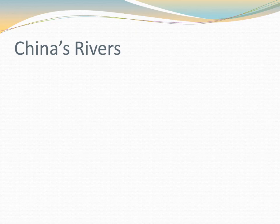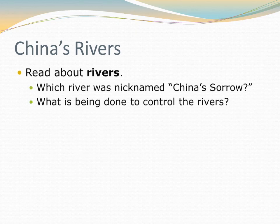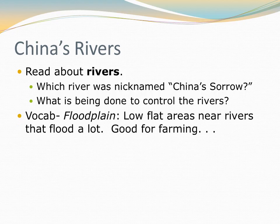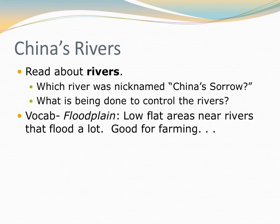In China, the flooding problem is coming from the rivers. In fact, one of those rivers was nicknamed China's Sorrow. As we read the section about rivers, look out for which river has been nicknamed China's Sorrow, what the government of China is trying to do to control the rivers, and to what degree that seems to be working. You'll also encounter the term floodplain — these are low, flat areas near rivers that tend to flood a lot. They're great for farming because they're flat and the soil is very fertile from river silt. But of course, they flood, so you don't want to live in a floodplain if you can avoid it.